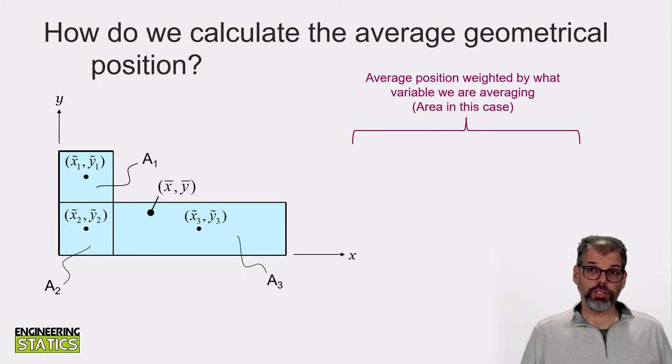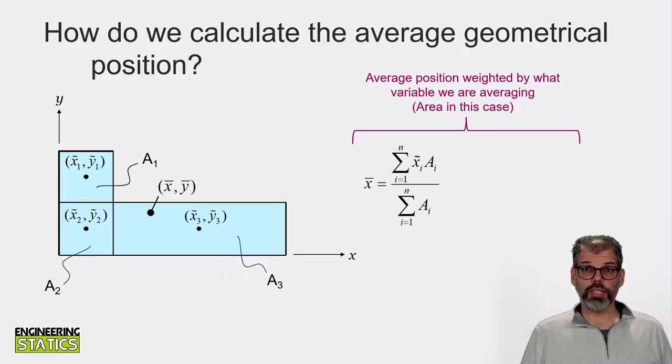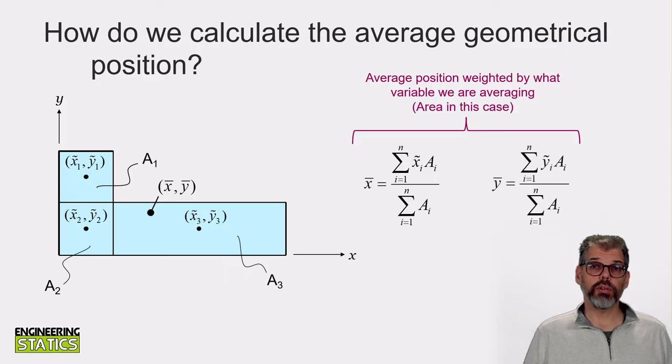We can then determine the centroid of the overall shape by performing a weighted average of the known centroids of these smaller shapes. As our basis for the averaging is area, these positions are weighted by the area of the smaller shapes they belong to. So the location of the centroid can be determined by the summation of the x-coordinates of the known centroids multiplied by the area of the shape they belong to divided by the summation of all the areas, as well as the following similar expression for the y-coordinate of the centroid.